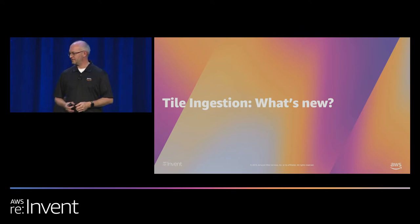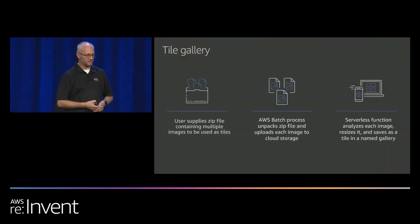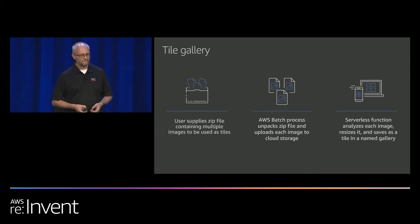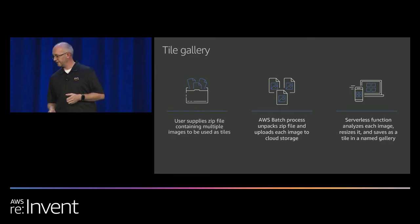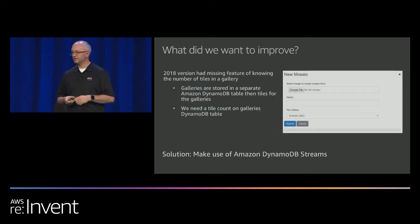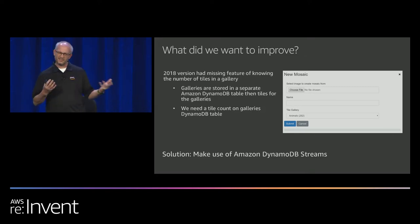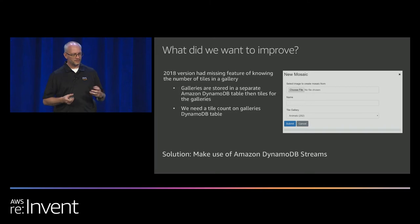Let's walk through what's new in tile ingestion. The basic process is the user gives us a zip file containing images. That gets handed off to a Batch process that unzips the zip file and sends each image to Amazon S3, which triggers a Lambda function that analyzes the image for color data, resizes it to be a tile, and saves it in a named gallery. In the 2018 edition, the user had no idea how many tiles were actually inside a gallery.